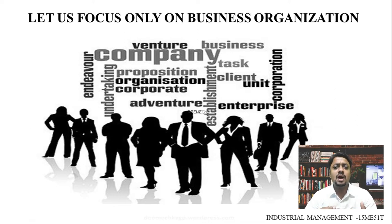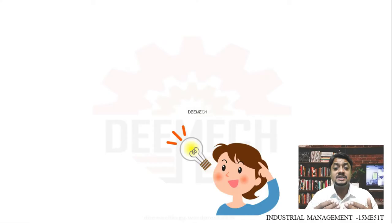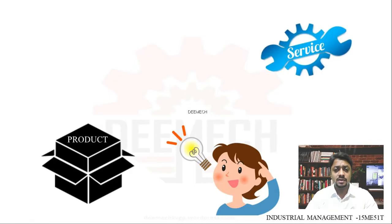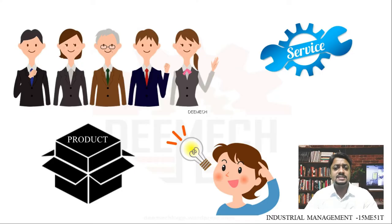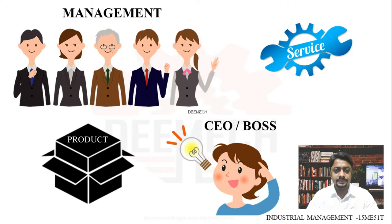A business organization has various terms associated with it. Let us understand the base — how a business organization starts. Any business organization starts with a person's idea about a product or service with which they can generate profit. To get this idea into action, they may need resource persons, since a single person may not have all the qualities to run the business. Hence comes the management — a group of people who frame the policies and procedures to start, run, and maintain the business.